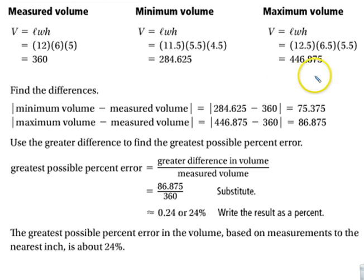So we're taking our minimum minus the measured, what we found, and we get 75.375. We're going to take the greatest difference in the volume divided by the measured volume. So the greatest one is the 86.875 over 360 gives us about 24%. So the greatest possible percent error in volume based on the measurements to the nearest inch is about 24%.